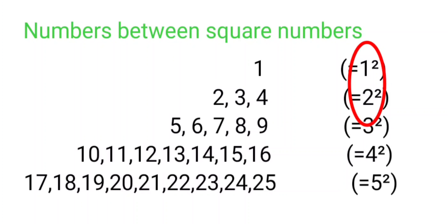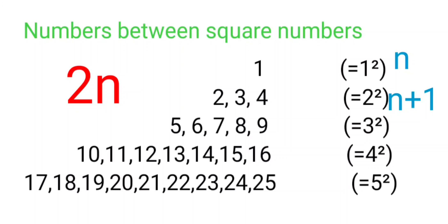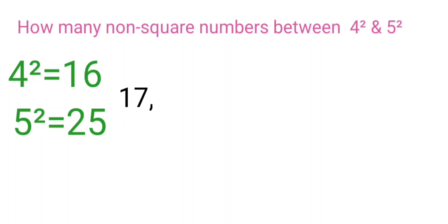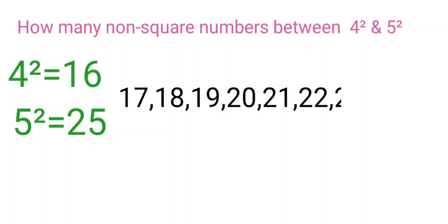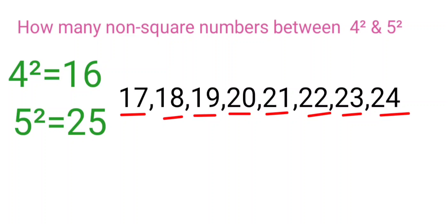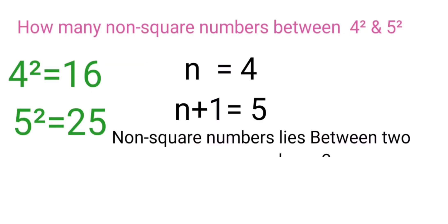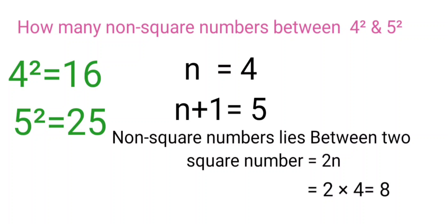So between two square numbers, how many non-square numbers are there? Take 1² and 2² — between them, 2 non-square numbers exist. If the smaller number is n and the next is n+1, then the formula is: there are 2n non-square numbers between n² and (n+1)². For example, between 4² and 5², n = 4, so 2×4 = 8 non-square numbers: 17, 18, 19, 20, 21, 22, 23, 24.